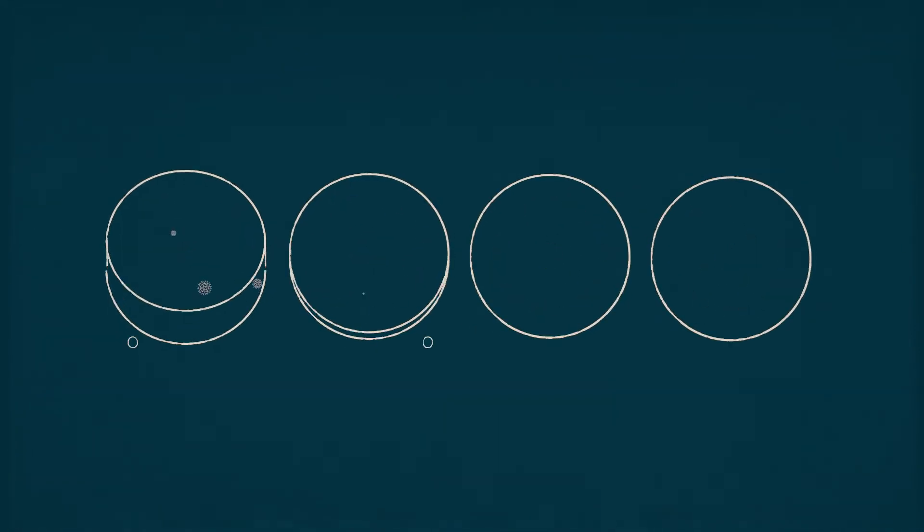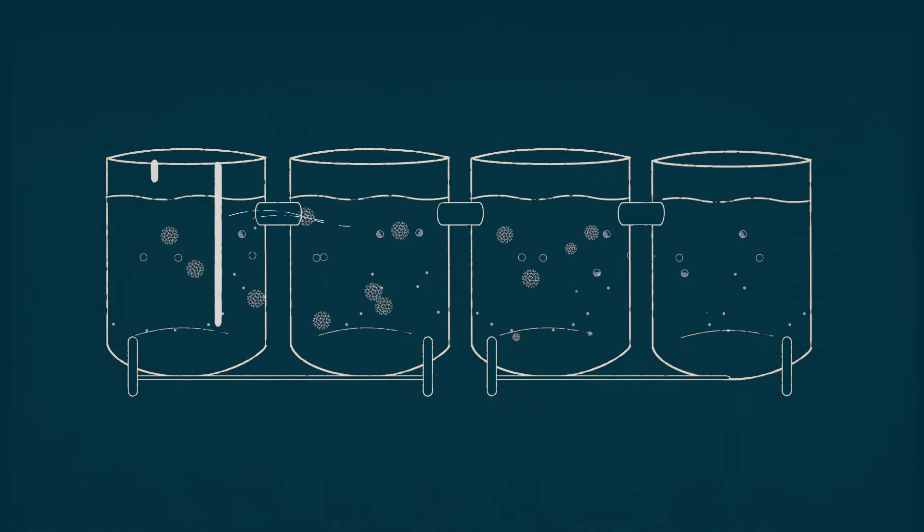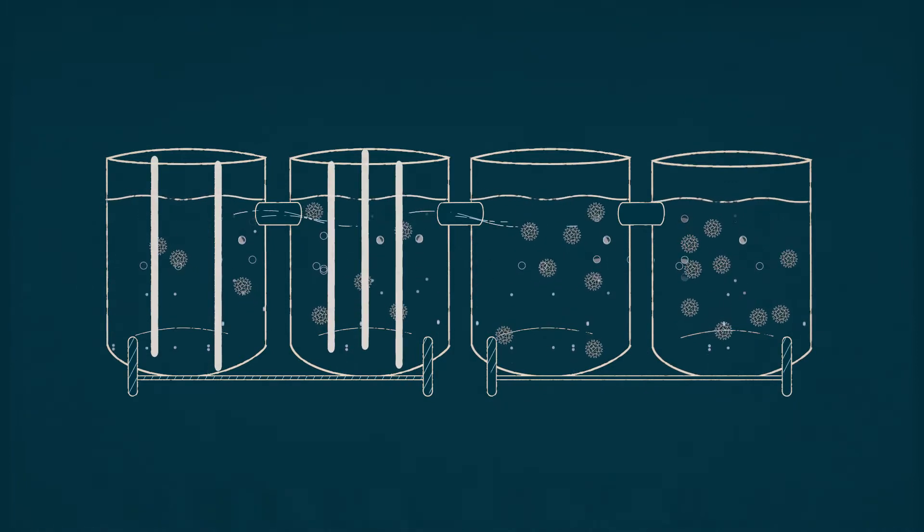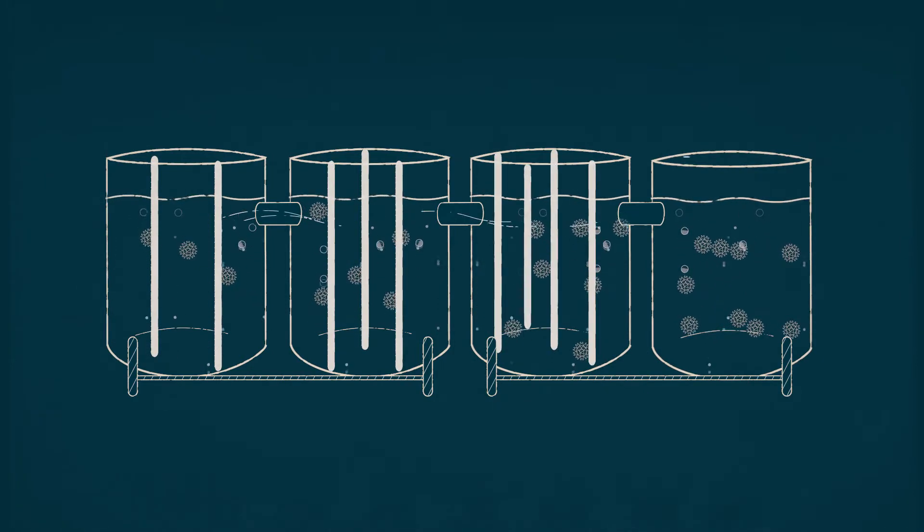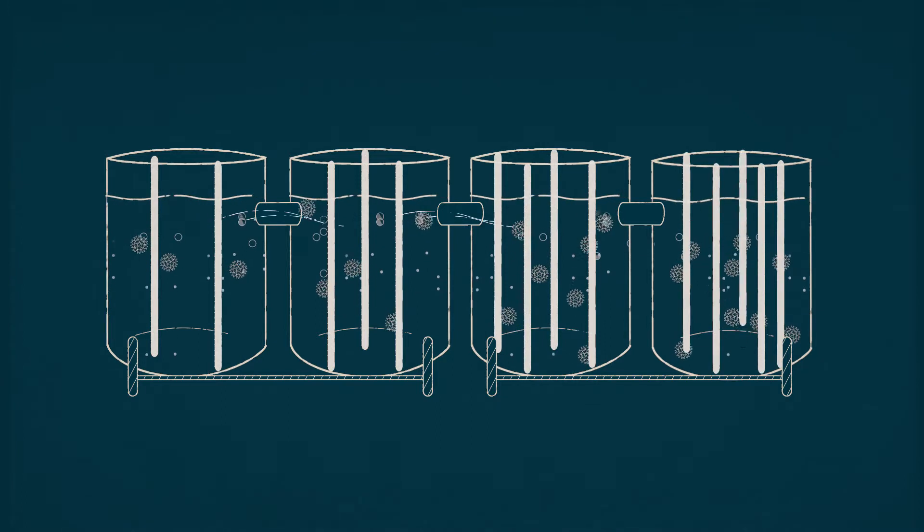This flows through the process tanks where it's exposed to light and air, promoting the microalgae to photosynthesize and take up phosphorus and ammonia.